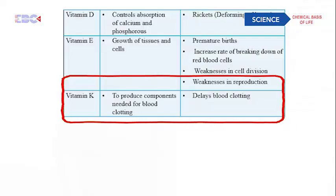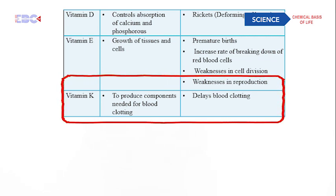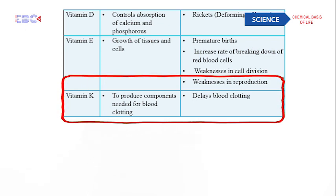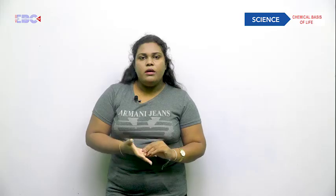Vitamin K is needed to produce the components required for blood clotting and coagulation of the blood. The deficiency symptom of vitamin K is that it delays blood clotting.